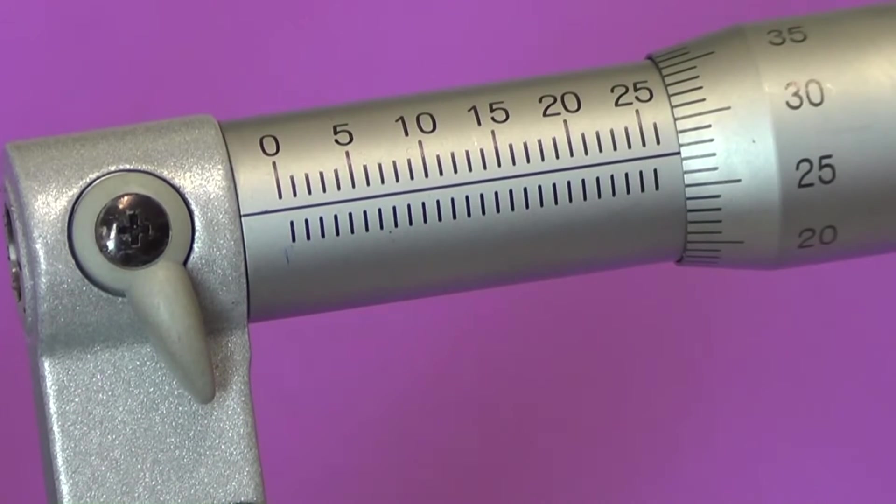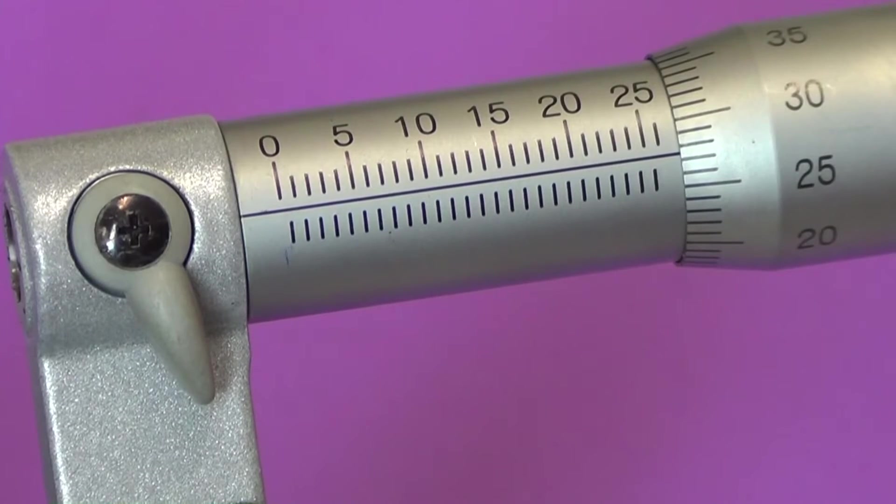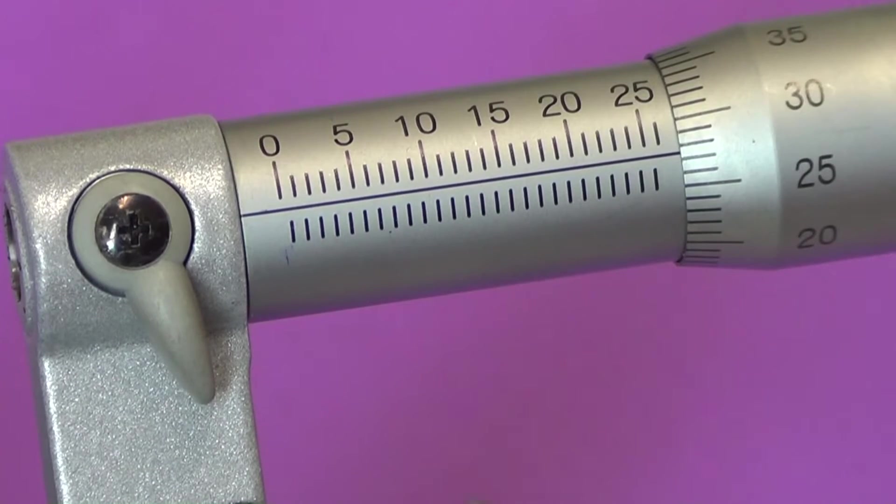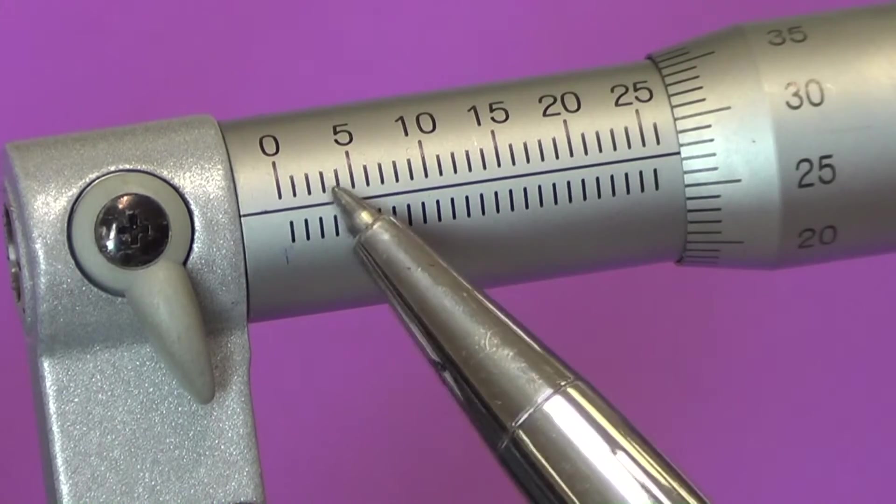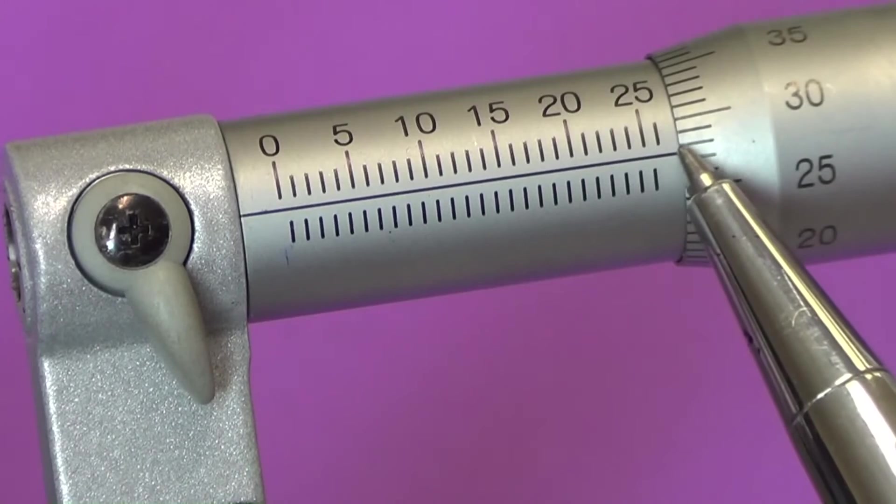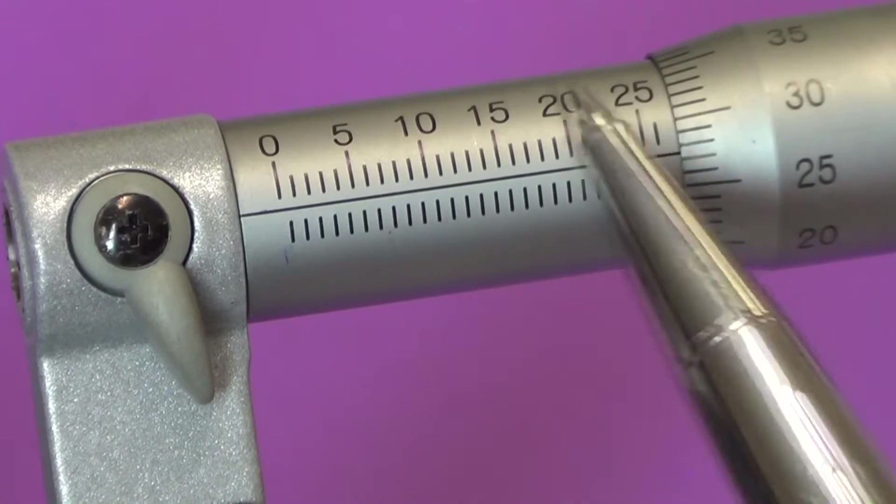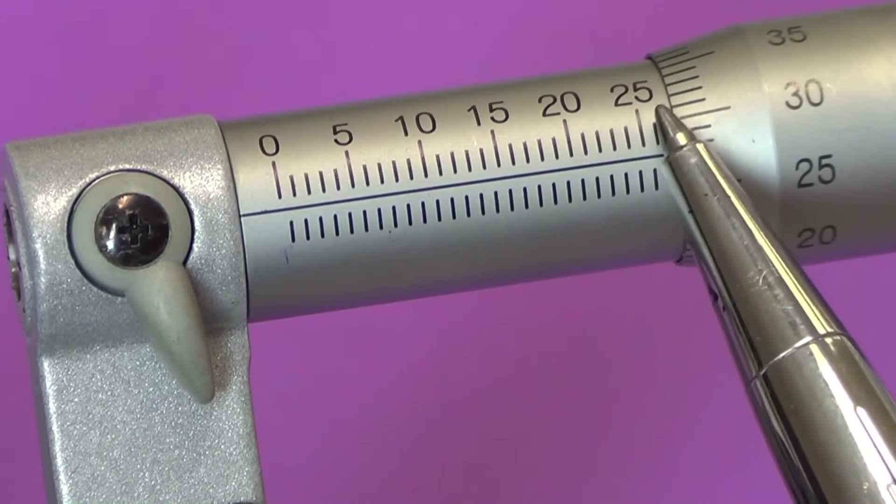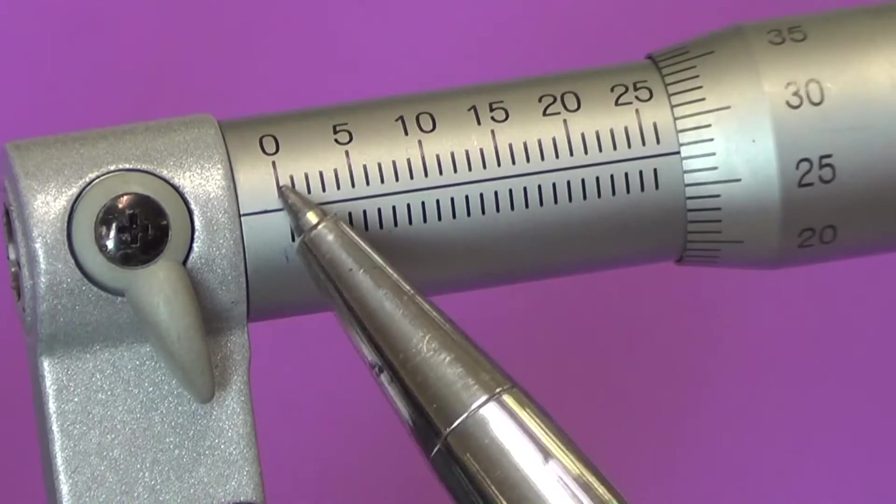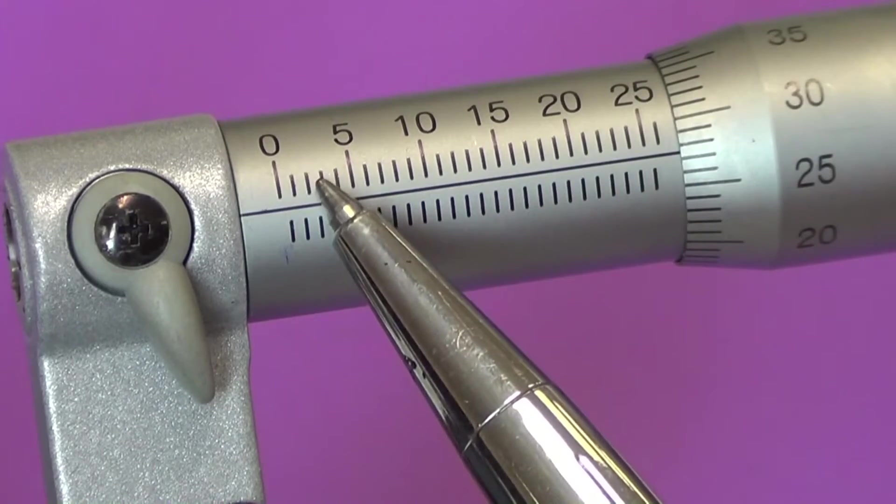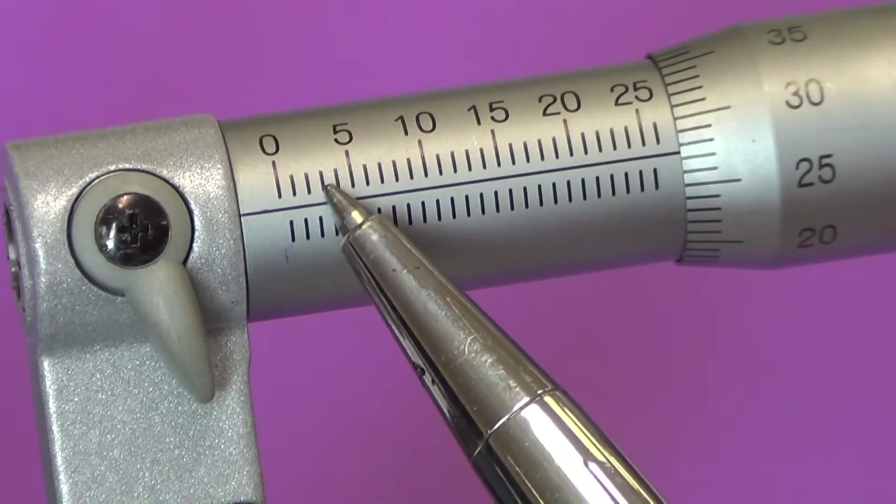Here we see the micrometer, and we're looking at the sleeve. The sleeve contains the major scale, or the millimeter scales. You can see there a longitudinal or horizontal line running along the full length of the sleeve. On the top of that line are increments of one millimeter, one, two, three, four.